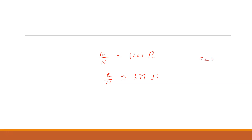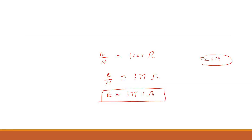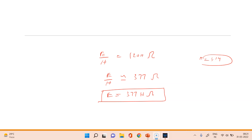So E is approximately 377 times H. This is the relation between E and the magnetic field. I hope you have understood the derivation. Thank you, thanks a lot.